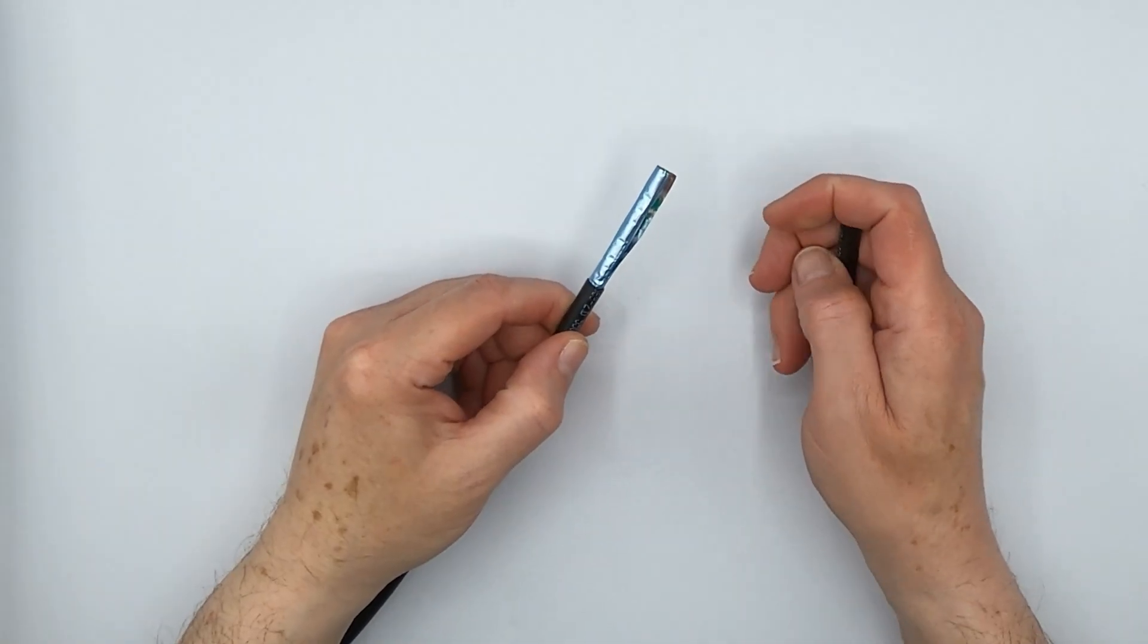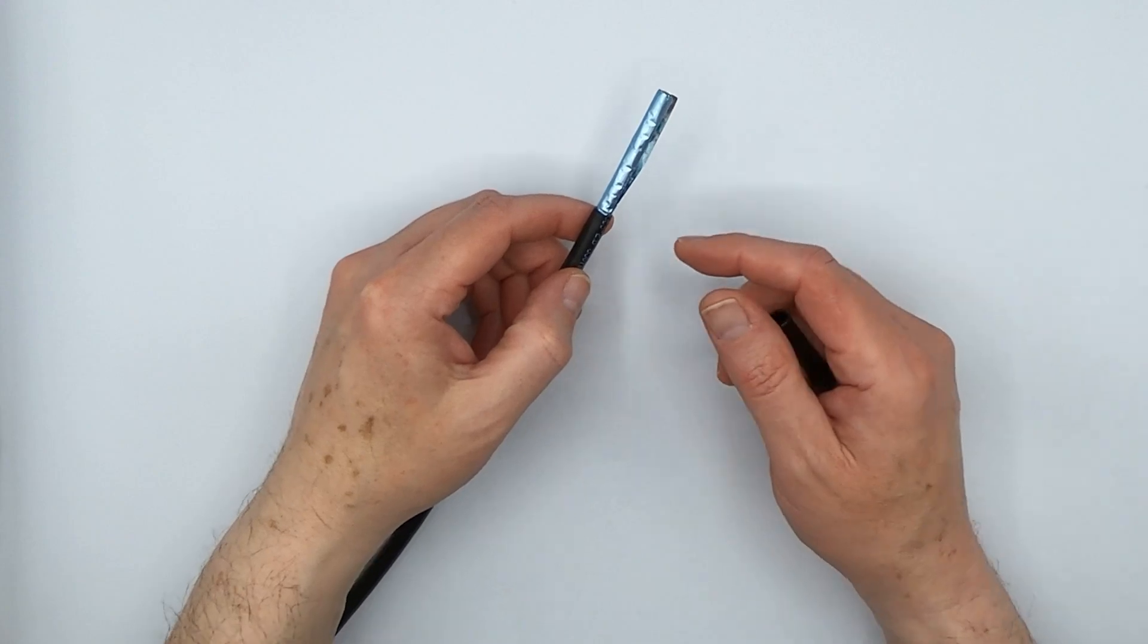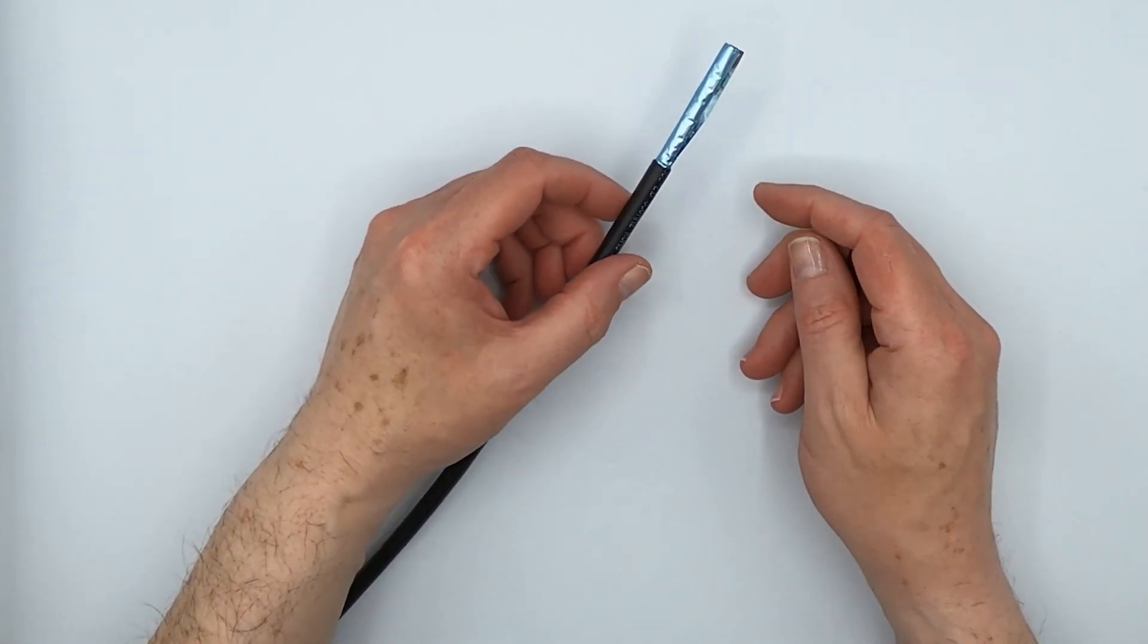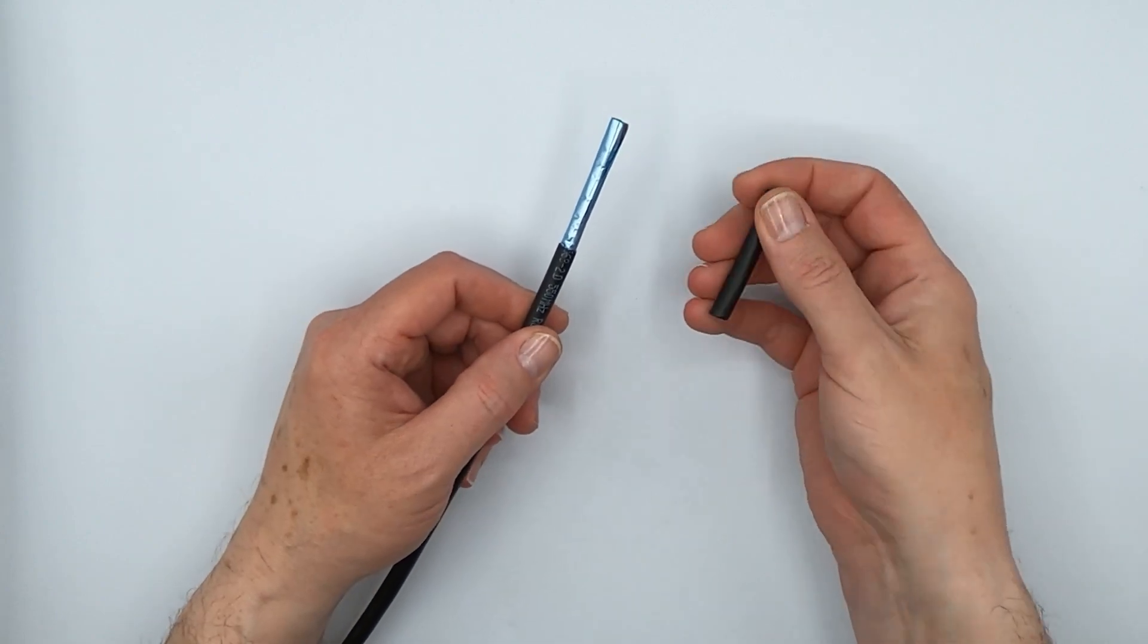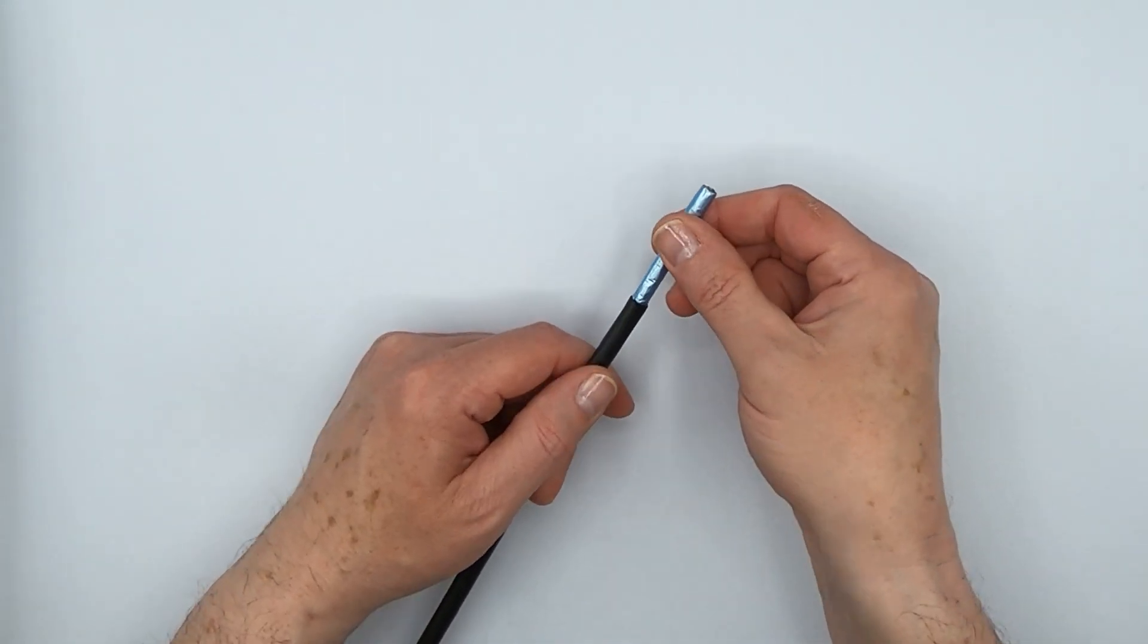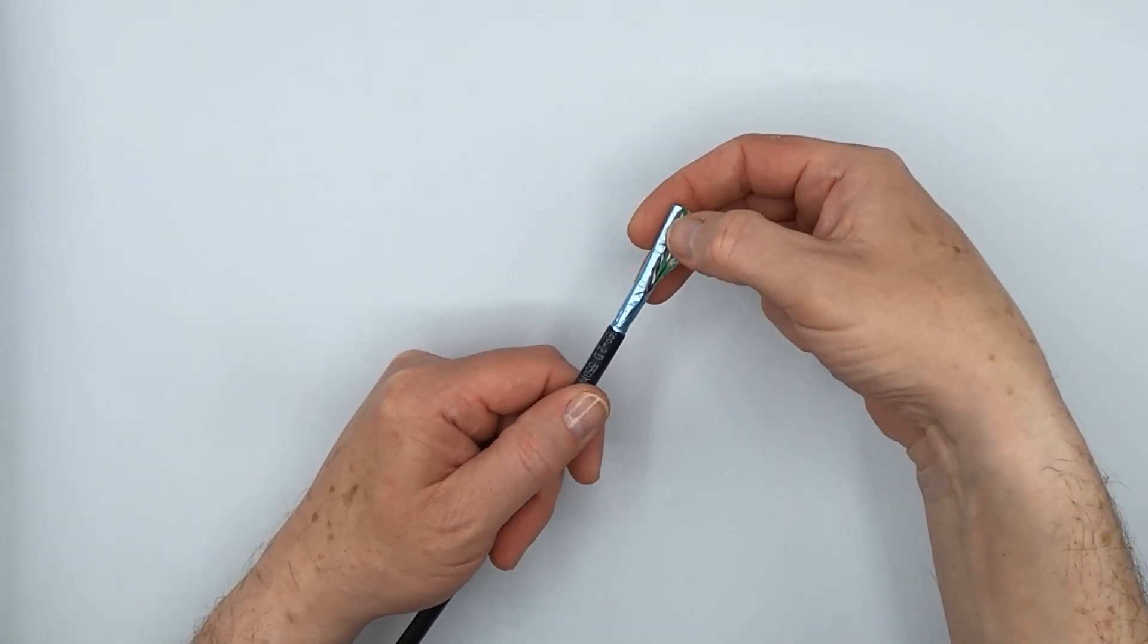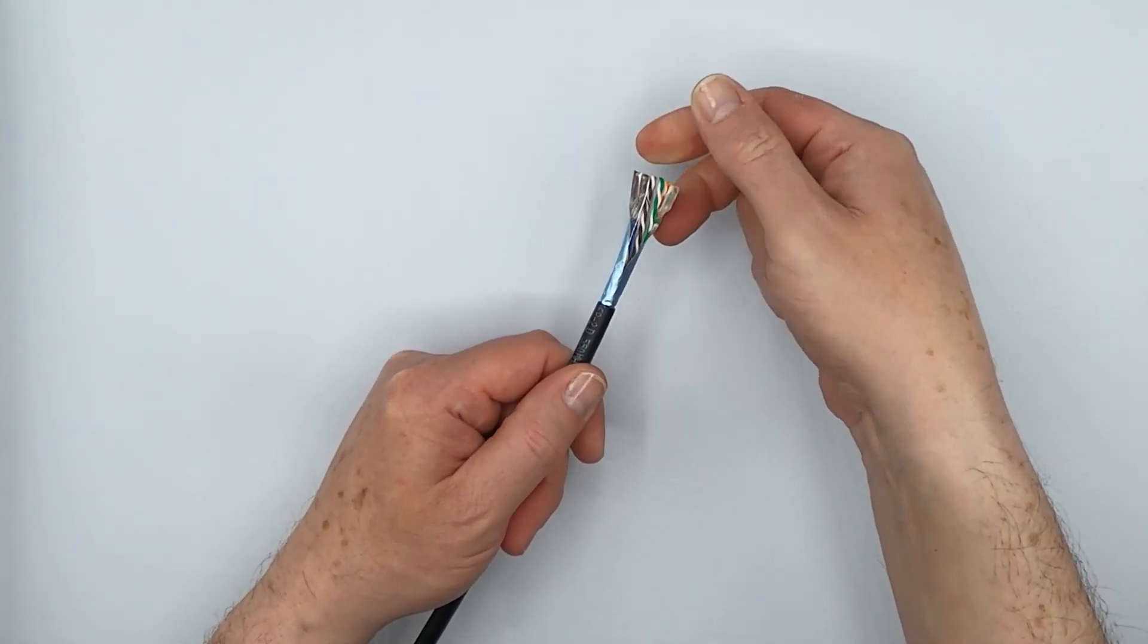Okay, so if you've been working with shielded ethernet cable in the past, or you're new to it, if you strip off the cable jacket, you're going to be presented with this nice blue foil mylar backed cable shield. And inside there are all your conductor wires.